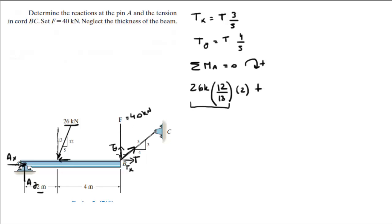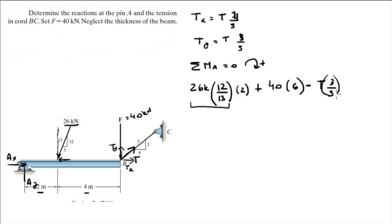Plus the 40 kN force going straight down, times its distance from A which is 2 plus 4 = 6 meters — that's positive. Minus the tension's Y component, which is the only part creating a moment at A: T times 3/5 times 6, and all of that equals 0.